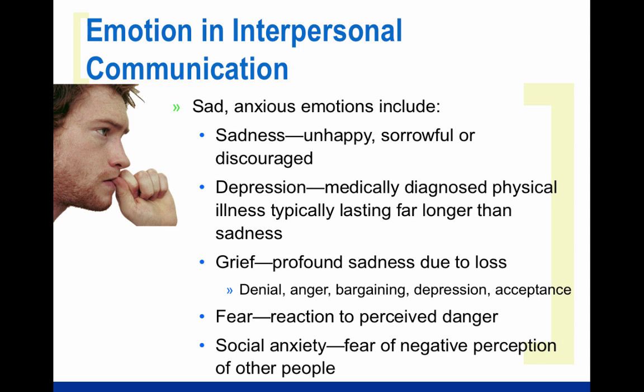Then we have grief. Grief is profound, extreme sadness due to loss of something or someone that meant a great deal to us. There are five stages that people tend to go through in grief: denial, anger, bargaining, depression, and finally acceptance. It can take several years to go through all five stages, and sometimes people go back and forth between these stages before they finally reach acceptance.